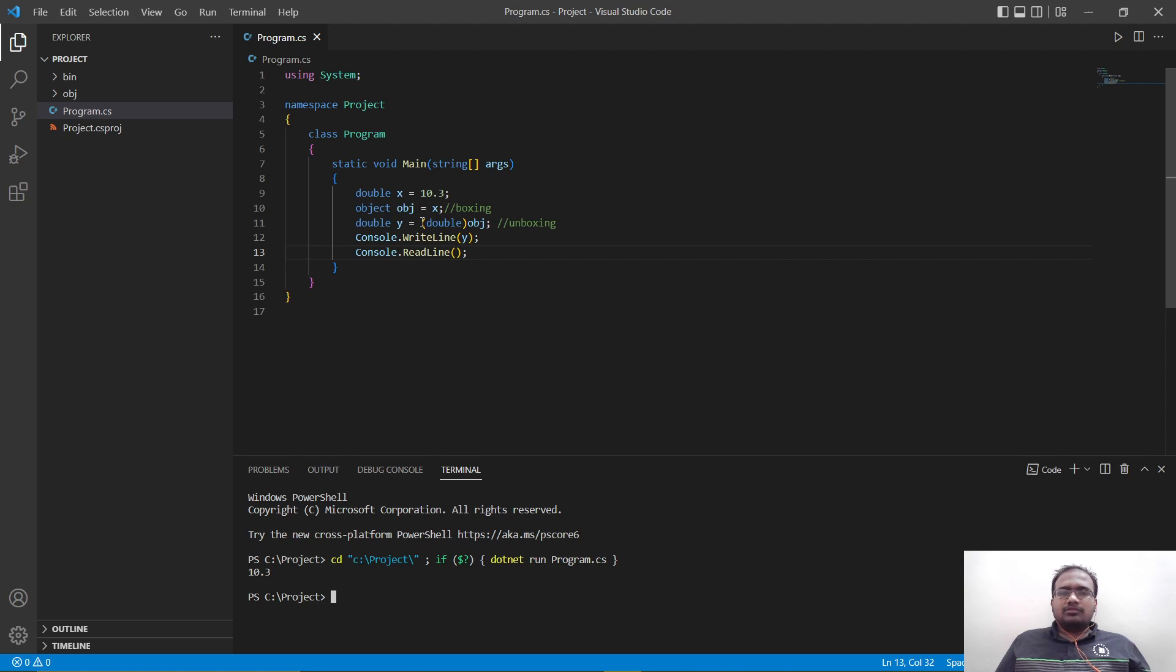Now, let's try something different. Let's try to type cast this double into an int. Let's try to type int and change this to int here. Now, let's save and run it.